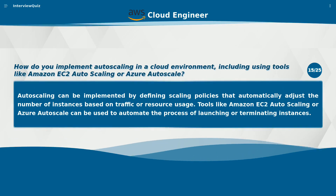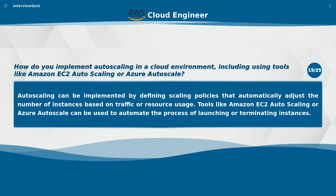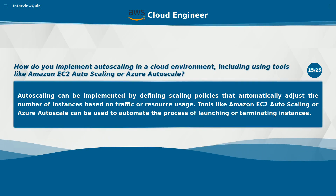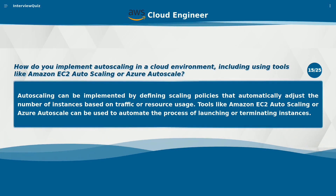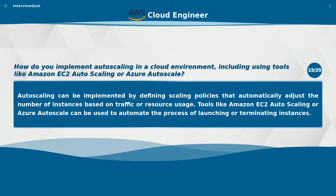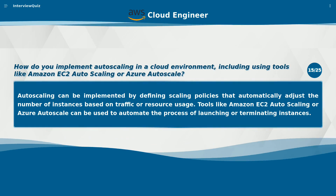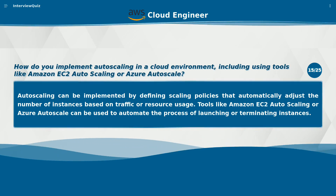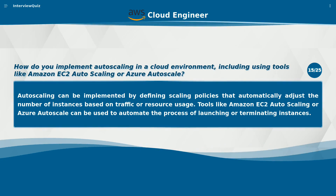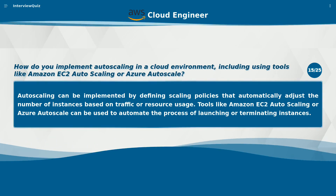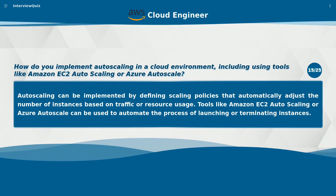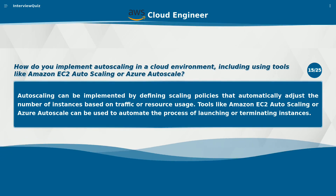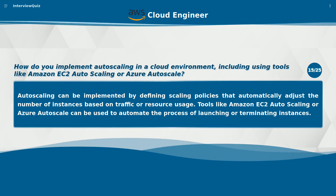How do you implement autoscaling in a cloud environment, including using tools like Amazon EC2 Autoscaling or Azure Autoscale? Autoscaling can be implemented by defining scaling policies that automatically adjust the number of instances based on traffic or resource usage. Tools like Amazon EC2 Autoscaling or Azure Autoscale can be used to automate the process of launching or terminating instances.